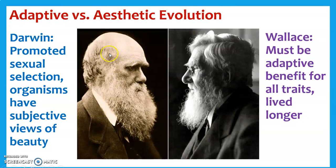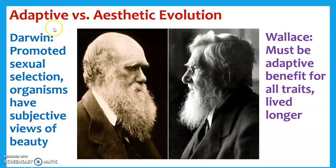However, Darwin also proposed this idea of sexual selection — that there are some traits out there that just don't really fit the idea of being beneficial for survival and reproduction. What we call normal natural selection, or adaptive evolution, just really can't explain them very well.